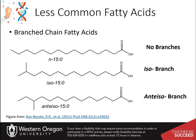Branched-chain fatty acids are common constituents of the lipids of bacteria and to a lesser extent of animals and plants. Isomethyl branched fatty acids have the branch point on the penultimate carbon — one away from the omega end — while anti-isomethyl branched fatty acids have the branch point on the antepenultimate carbon atom, two carbons away from the omega carbon. Branched-chain fatty acids and short-chain fatty acids (one to four carbons in length) are produced by microflora found in the gut and may play an important role in maintaining gut health and resistance to pathogen colonization.